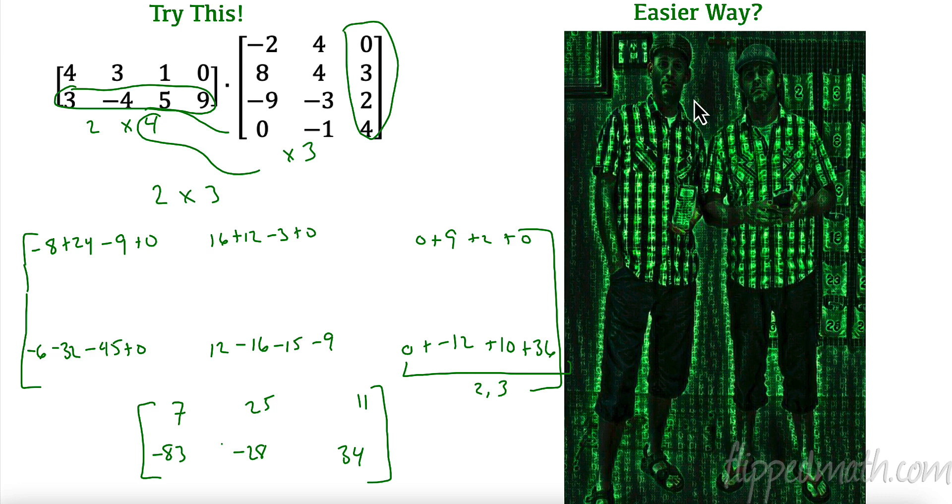All right. Hopefully you were able to do that one. I have shown my work here. My result was 7, 25, 11, negative 83, negative 28, and 34.